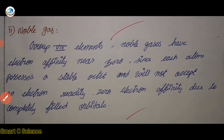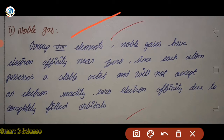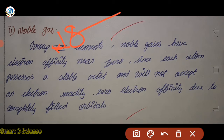Noble gas is the 18th group element. Noble gas will not accept any element or electron — it will remove any element. All noble gas elements are stable; they belong to group 18. The electron affinity of noble gases is approximately 0, as they are already stable.